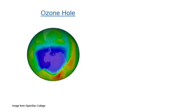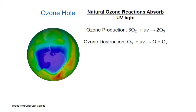A classic example of a catalyzed process is the destruction of ozone in the stratosphere to create the ozone hole. The stratosphere is the layer of the atmosphere approximately 20 kilometers up from the surface of the earth. At this level, ozone gas is naturally produced by the interaction of molecular oxygen, O2, with UV light. At the same time, UV light can interact with ozone molecules and decompose them back into molecular oxygen and an oxygen radical — a neutral single atom of oxygen.